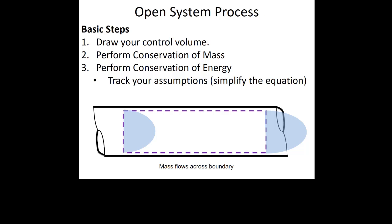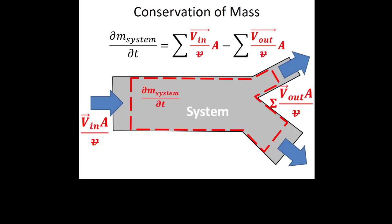I don't see anything in the chat, but as always you're welcome to write something in the chat or unmute yourself and ask a question. So last night we tested you on closed systems in thermodynamics, but moving forward for the next exam we'll start to look at open systems. The general process we've been talking about for open systems is: first draw our control volume, then do conservation of mass, then do conservation of energy.